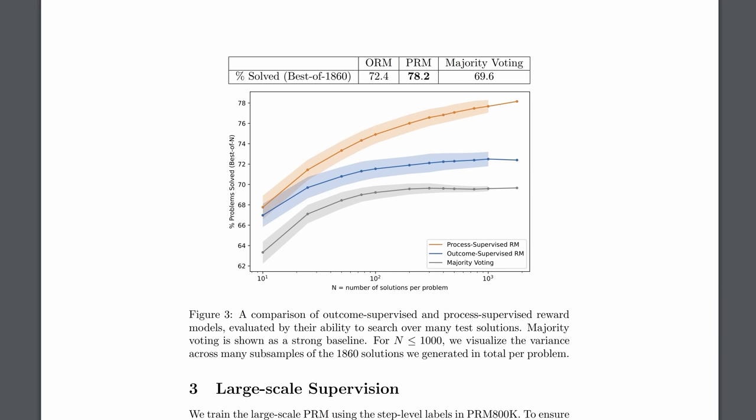But back to why this is so crazy. Look at how many solutions it could scan. At the end of the x-axis here are 1,860 solutions. And one tried and tested way of finding the best of those solutions is to do majority voting. In other words, which one came out the most often? This has been Google's preferred approach, and it's linked to self-consistency. It's a fairly state-of-the-art approach, but look at how the other methods outperform it.